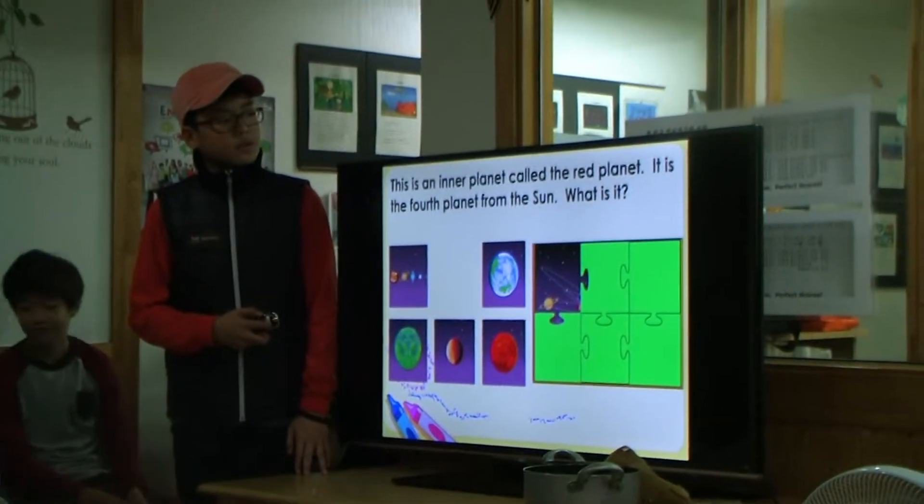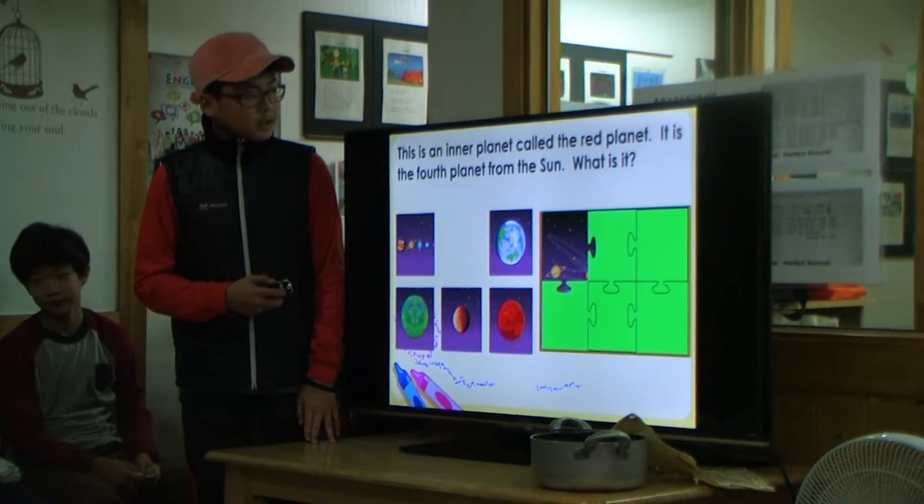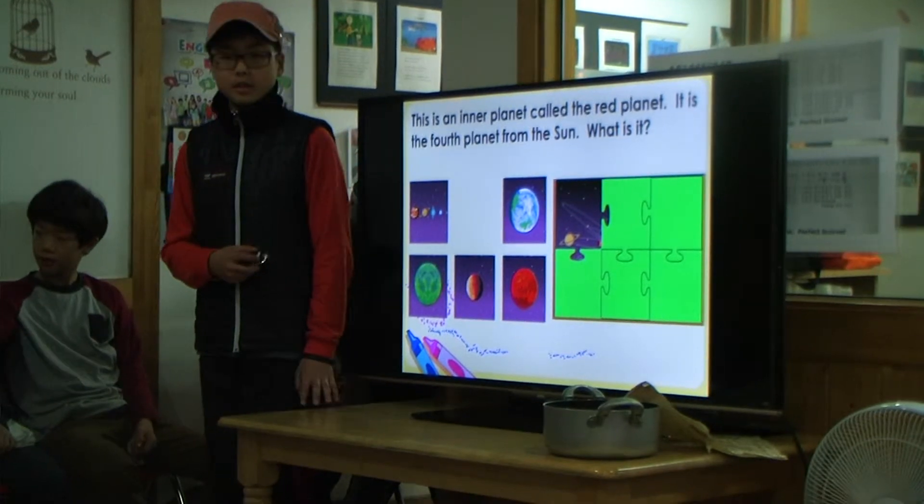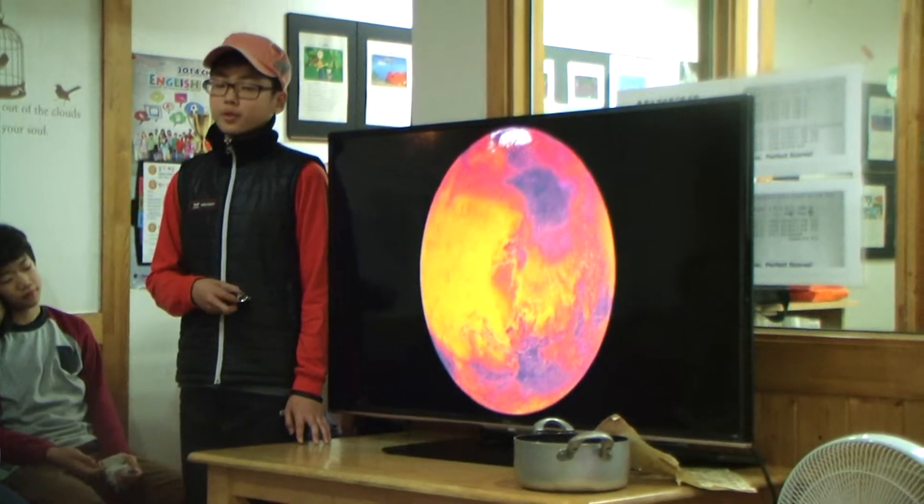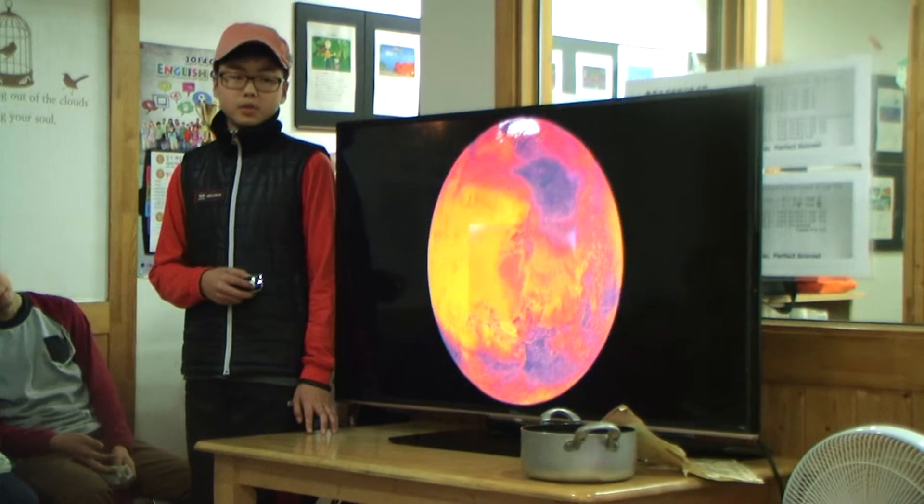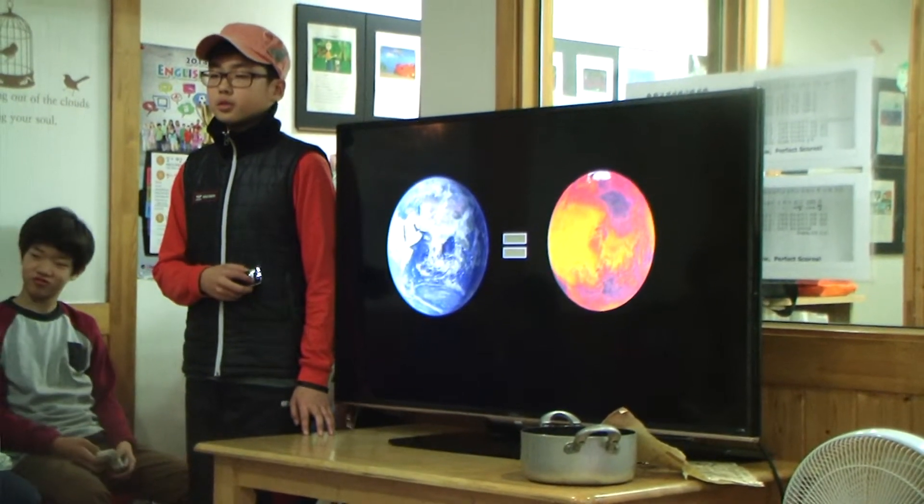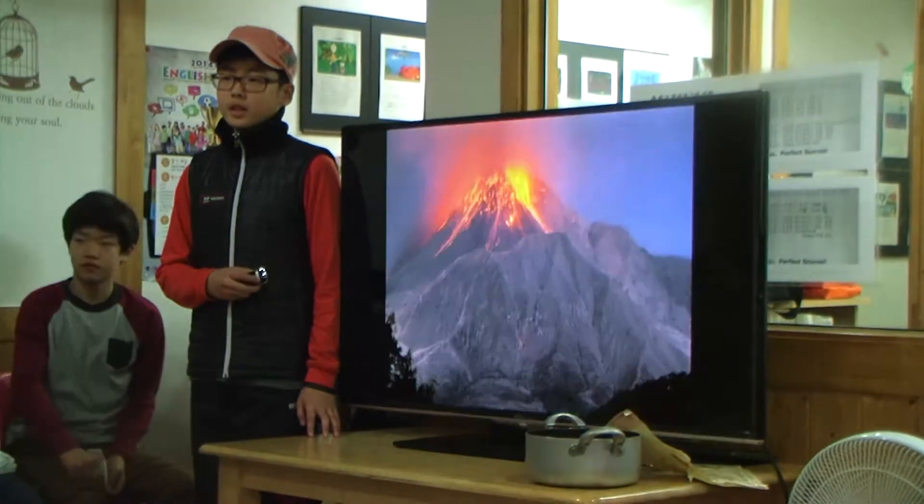This is an inner planet called the red planet. It is the fourth planet from the sun. What is it? Mars! Mars is called a red planet because the surface is covered by rusty red dust. It has features similar to Earth, like canyons and dry volcanoes.